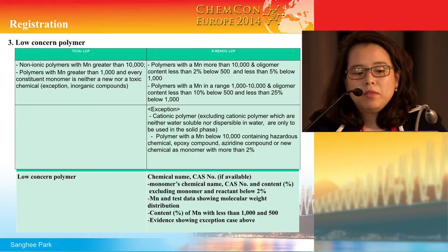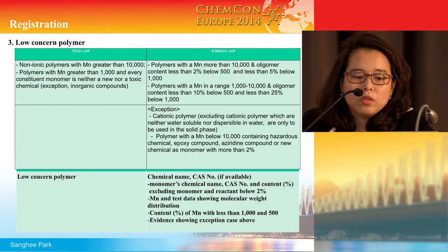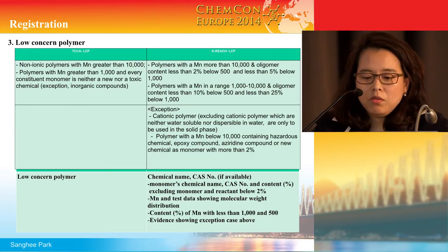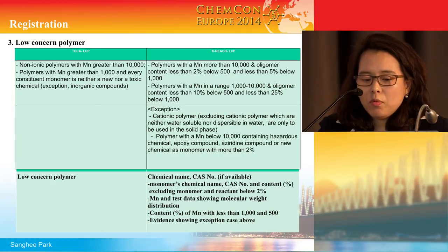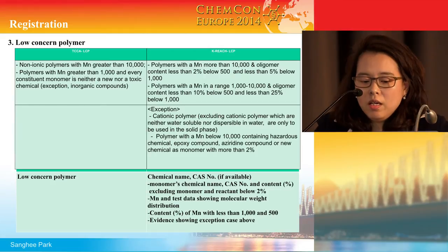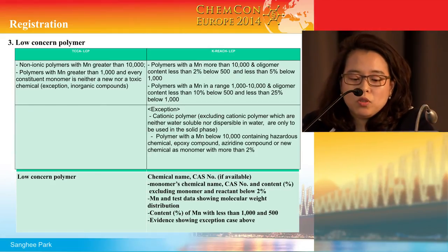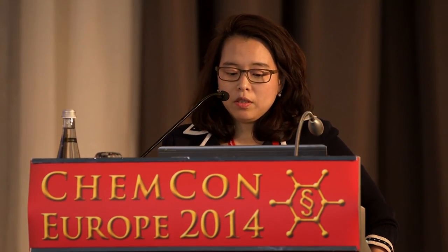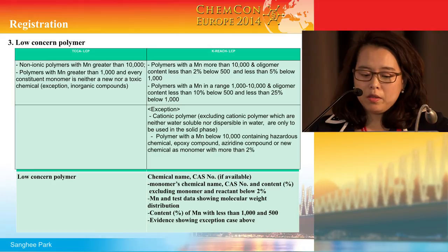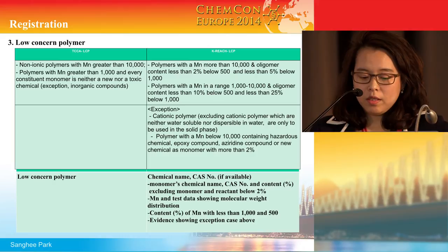I will spend some time on the new low concern polymer. In comparison to TSCA, K-REACH defines the low molecular weight for low concern polymers, and there are some exceptions — cationic polymers and polymers with specific functional groups. For the low concern polymer application, some information must be prepared, such as monomer information and molecular weight distribution.